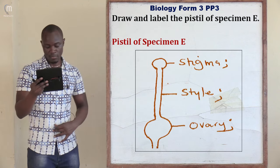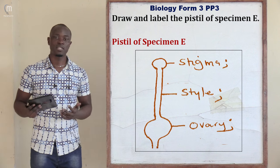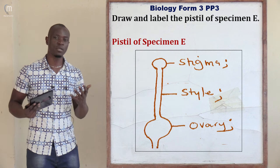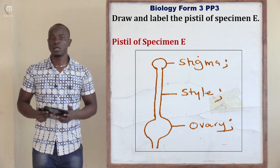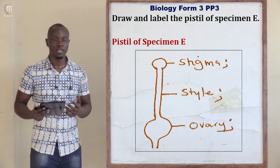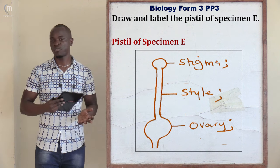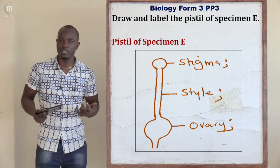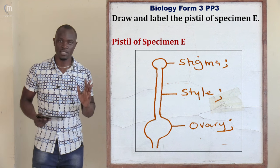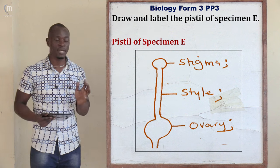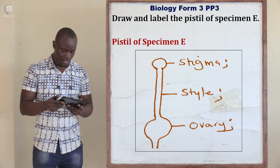Roman 5 asks you to draw and label the pistil of specimen E. The pistil is the female part of the flower — also called the gynoecium — comprising the stigma, style, and ovary. The stamen is the male part (androecium), comprising the pollen grains, anther, and filament. Draw only the pistil; if you include any male parts, everything becomes wrong because the question asks only for the pistil.